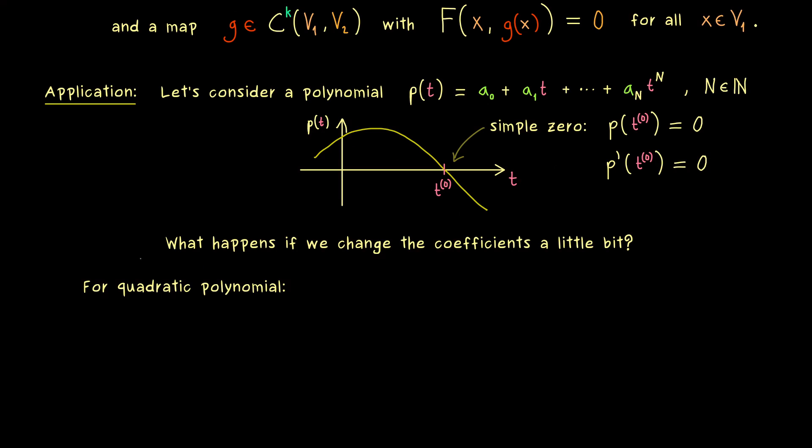But before we do that let's first consider a simple case we already know. Namely we take a general quadratic polynomial which only has three coefficients. More precisely in order to have a quadratic polynomial here we have to assume that the last coefficient a₂ is not equal to zero.